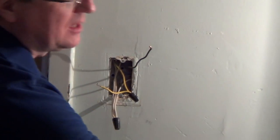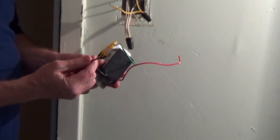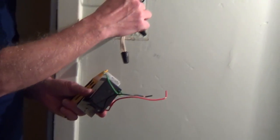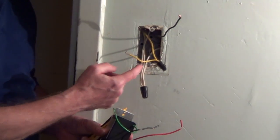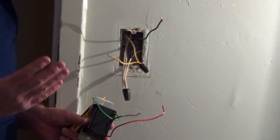So on the dimmer, on the instructions, they want the black wire connected to the wire that's coming from the service panel and they want the red wire going to the wire that's going to the lights. They call that the load.